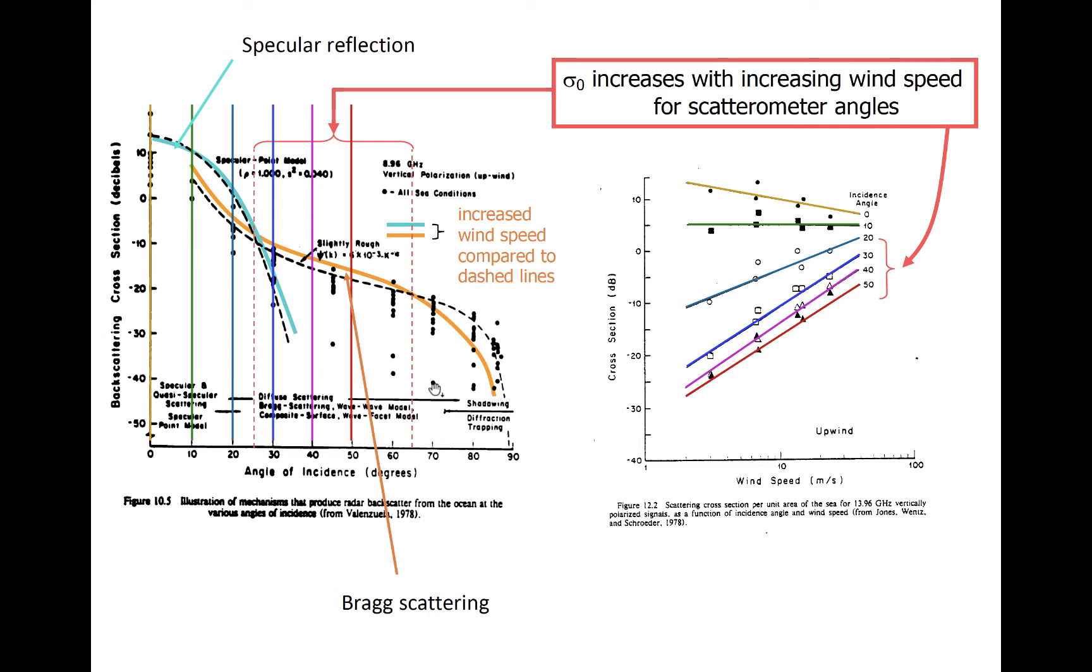To further demonstrate the point about Bragg scattering and operating in the 25 to 65 degree range, the panel on the right shows for various incidence angles, shown by these numbers here, an increase in wind speed decreases the cross section, the backscatter cross section generally. This is true for low incidence angles like 0 degrees. While for incidence angles greater than 20 degrees, the opposite is true, and the wind speed causes increasing backscatter, quoted on the y-axis.